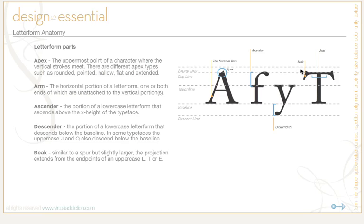A beak is similar to a spur, which we'll look at momentarily, but it's slightly larger. The projection extends from the endpoints of the uppercase L, uppercase T, or uppercase E. This right here is an example of a thin stroke, sometimes just called a thin. You can see how this A has a thin stroke on the left side and then a thicker stroke on the right side.